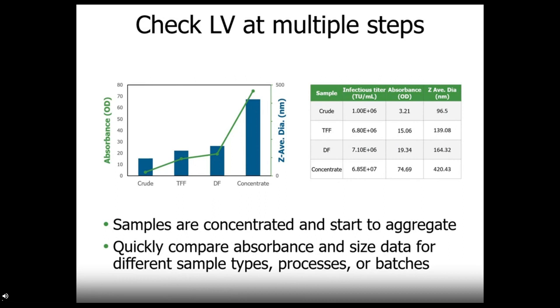UV-Vis can help you as well. Here are the absorbance results at 280 are shown in combination with the Z average diameter. Stunner allows you to find the perfect concentration without inducing aggregation and quickly compare between sample types, processes, and batches.